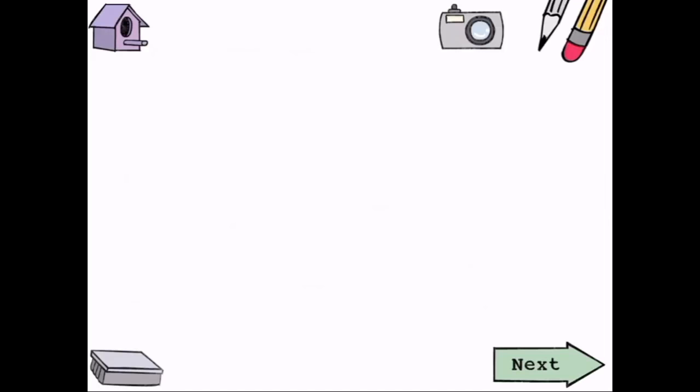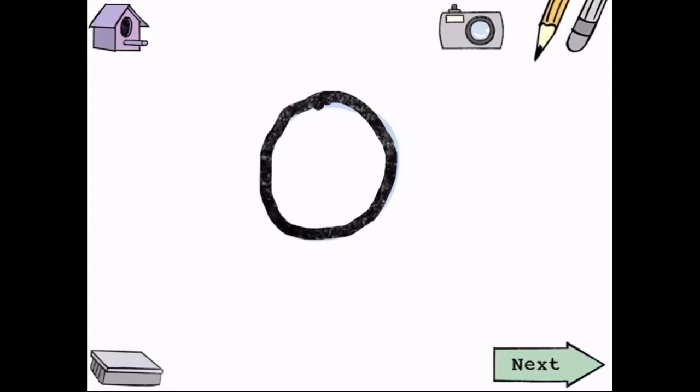We're going to start with the letter O. O. It appears in words like Mo. Very nice. Now we're going to draw a smaller letter O inside of that. O. So it kind of looks like a doughnut.